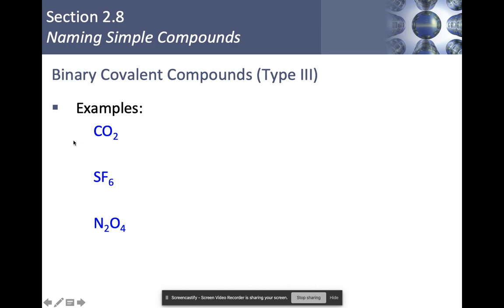So let's name some covalent compounds. I've got CO2, something that you already are aware of. I have carbon, and then I have oxygen, which changes to oxide. But I have two of them. So that means I put the prefix di in front. So it becomes carbon dioxide. SF6. S is sulfur. F is fluorine, but I change it to fluoride. I have six fluorides. So that means it's hexafluoride, sulfur hexafluoride. N2O4. I have nitrogen here. I have oxide here, because oxygen is going to be named as if it's an anion. So I have di for 2, and I have tetra for 4. That becomes dinitrogen tetroxide.